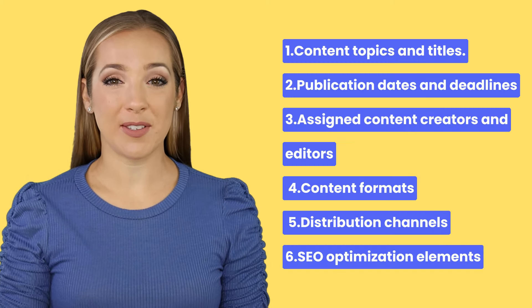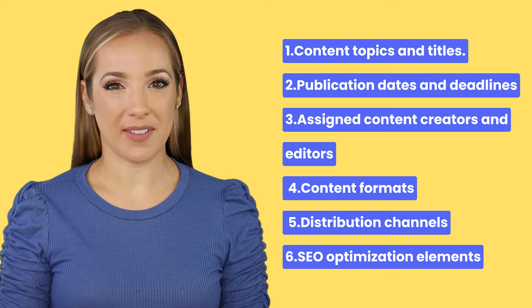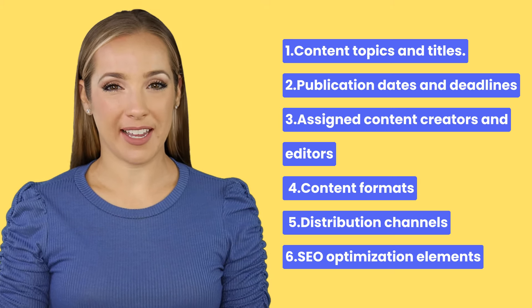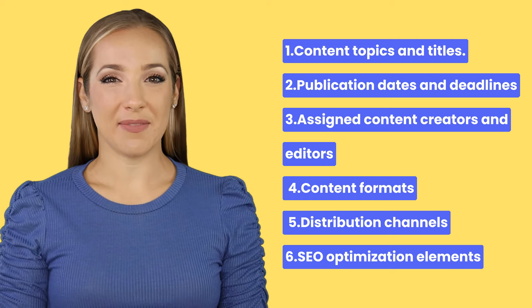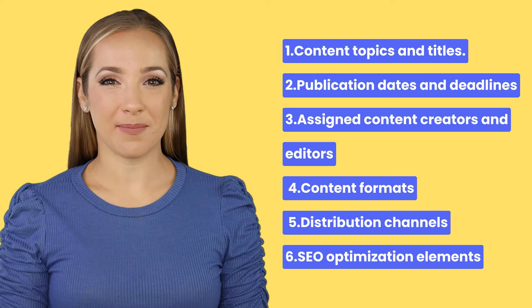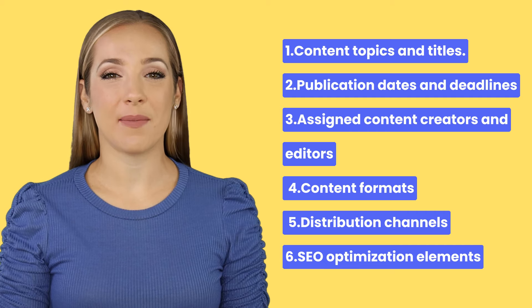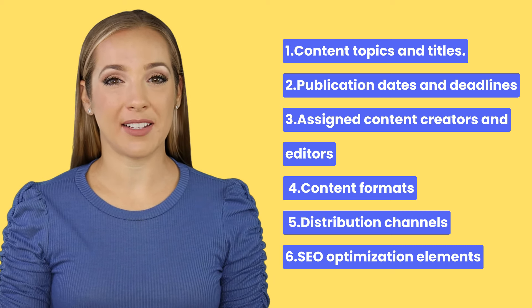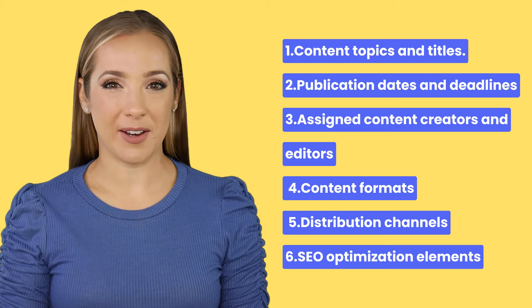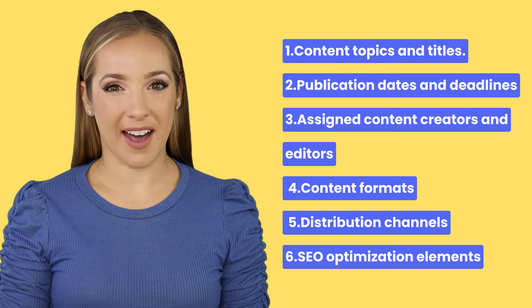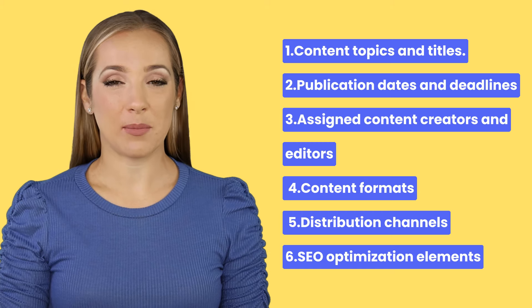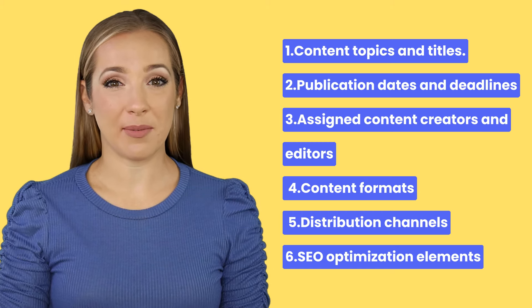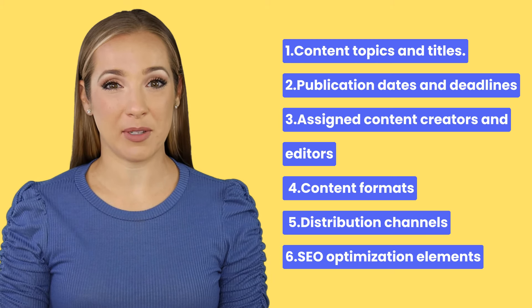Here are some essential elements to include in your content calendar. One, content topics and titles — clearly define what you'll be creating with captivating titles to grab attention. Two, publication dates and deadlines — set realistic deadlines and stick to them for consistent publishing. Three, assigned content creators and editors — assign roles and responsibilities for creation and editing. Four, content formats — specify whether it's a blog post, video, infographic, or another format. Five, distribution channels — plan where you'll share your content, like social media platforms or email campaigns.